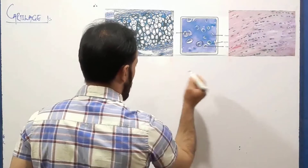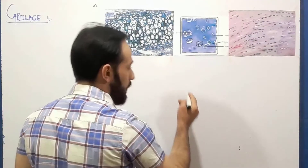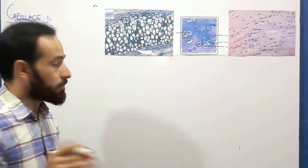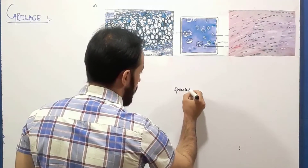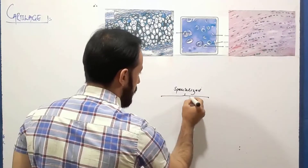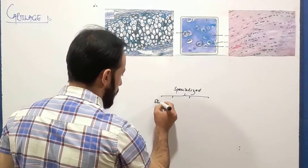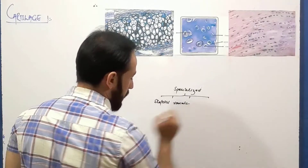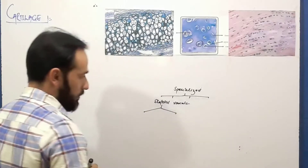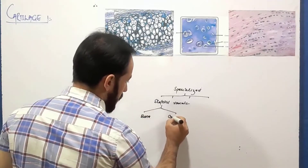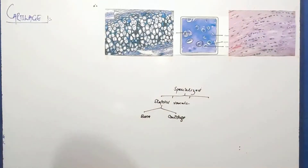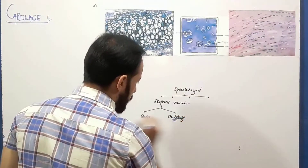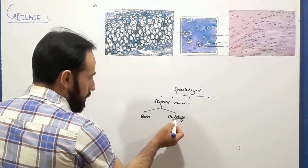Cartilage is a type of connective tissue. In our body, connective tissue is divided into embryonic connective tissue and specialized connective tissue. Specialized connective tissue is divided into four classes — the first one is skeletal connective tissue, then vascular and pigmented. Skeletal connective tissue is divided into two types: bone and cartilage. So here we are going to discuss about cartilage.